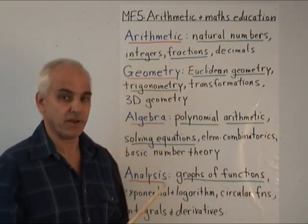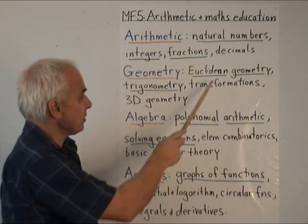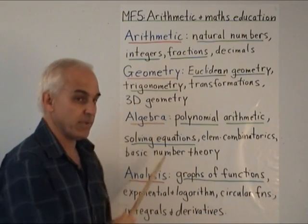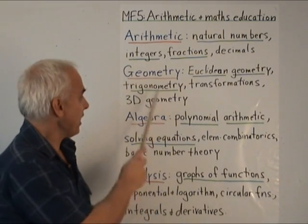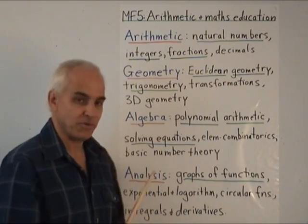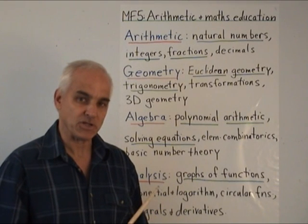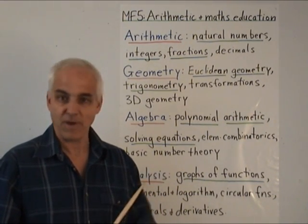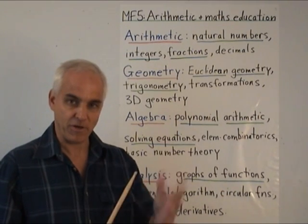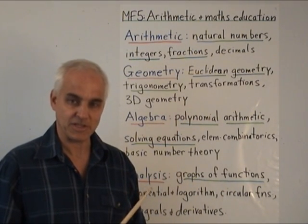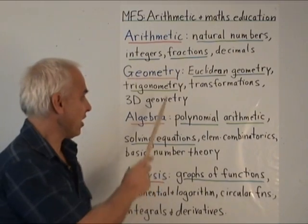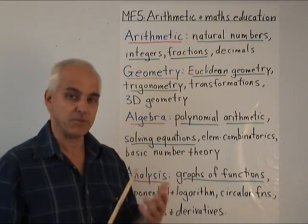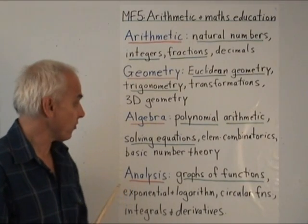Geometry is a bigger subject than arithmetic, and it includes Euclidean geometry, trigonometry, transformations, and 3D geometry. I think that trigonometry is actually a primary school subject — not the classical trigonometry you usually learn, but rational trigonometry, which you can hear about in my other series Wild Trig. Euclidean geometry and trigonometry are really subjects that ought to be developed in primary school.